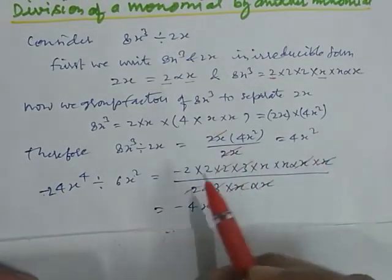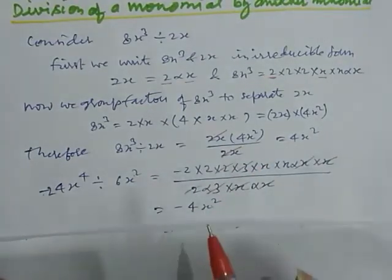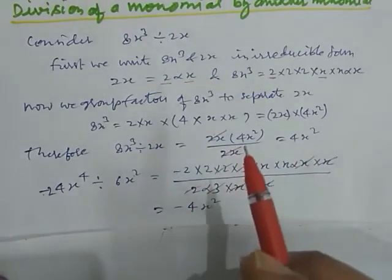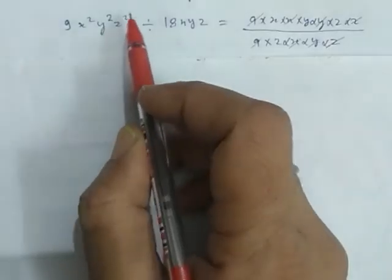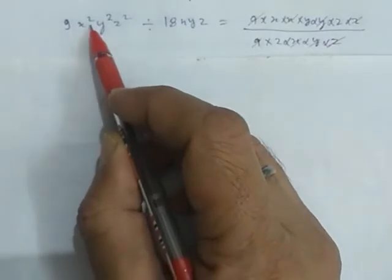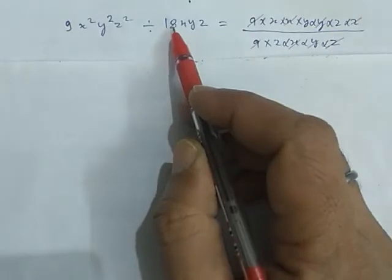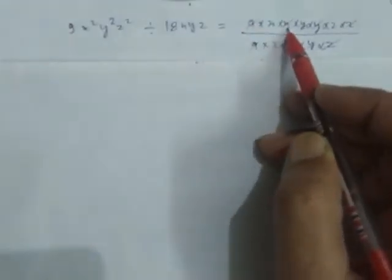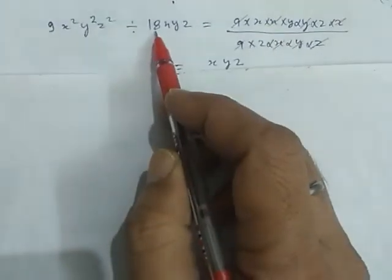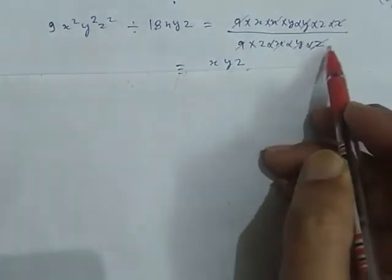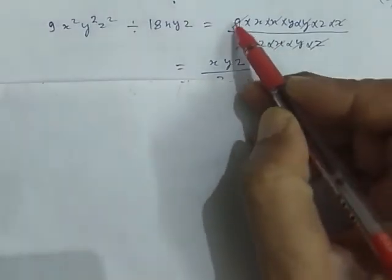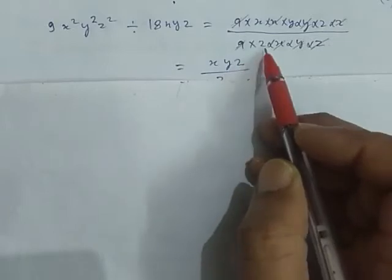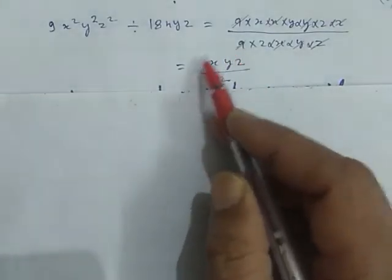By this way, we can perform division of any algebraic expression by factorizing them — factorizing and taking common, whatever is common we cancel out, and the rest is our answer. Now here we divide 9x square y square z square by 18xyz. We factorize: 9 into x into x into y into y into z into z, and 18xyz equals 9 into 2 into x into y into z. This 9 cancels by 9, x by x, y by y, z by z. So x, y, z are left in numerator and 2 in denominator — giving us xyz by 2 as our result.